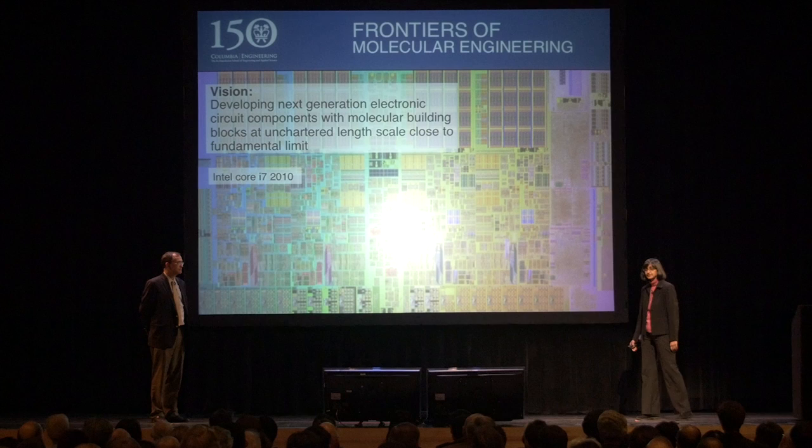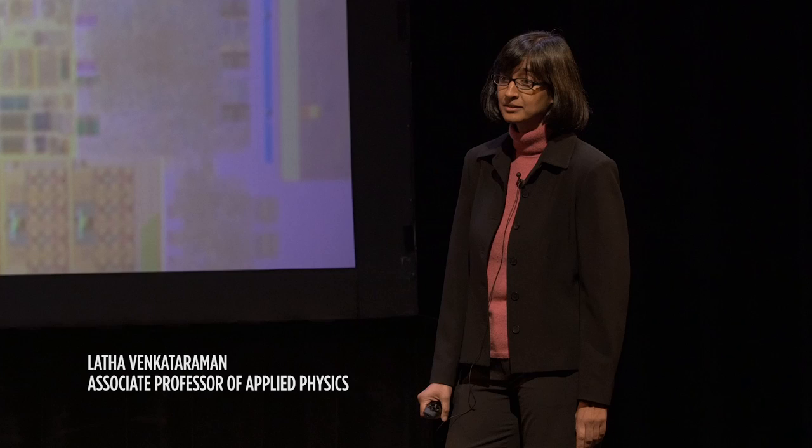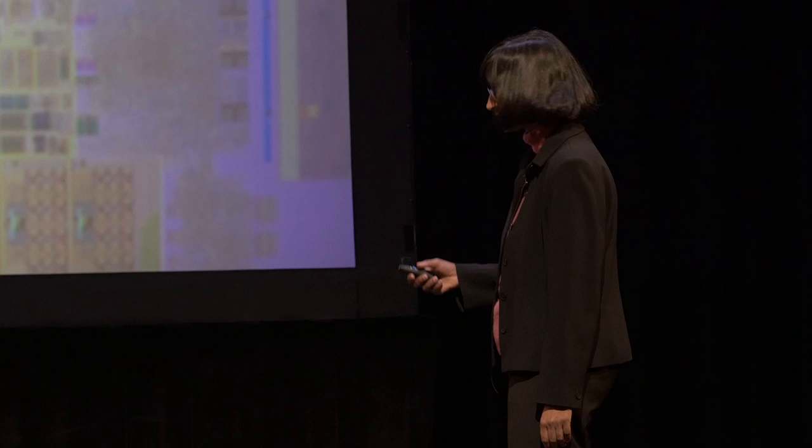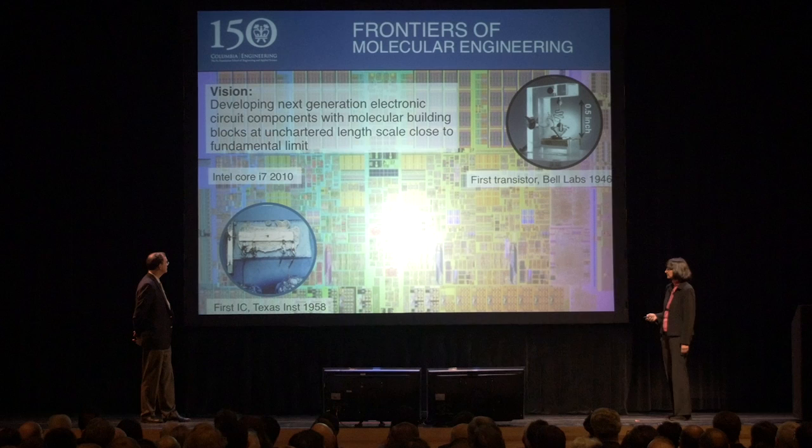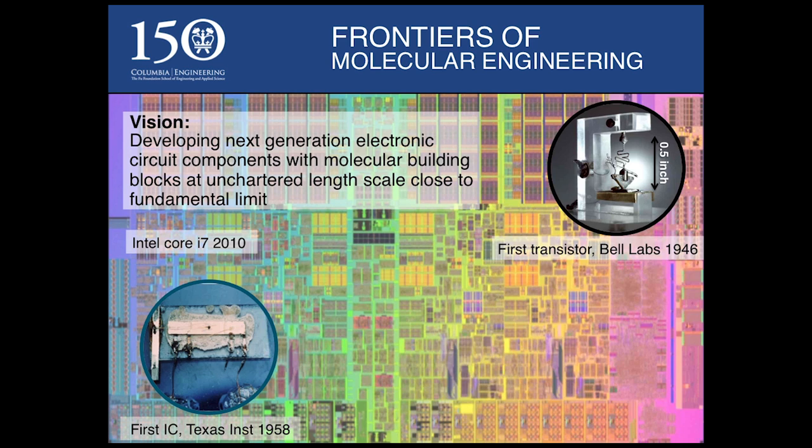Today, scientists and engineers at Columbia University are working together to create electronic circuits at a nanometer scale using novel materials. This drive for miniaturization of electronic components has come a long way since the first invention of the transistor at Bell Labs in 1946. This was followed by the creation of an integrated circuit at Texas Instruments in 1959, and since then, we've come a long way.